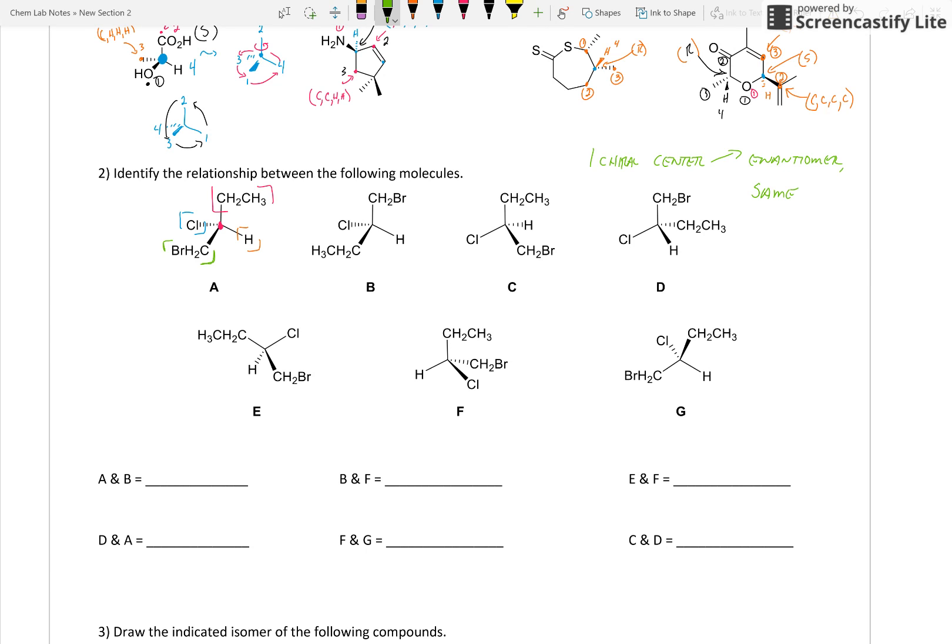If they all have the same formula and you only have one chiral center, and they're all connected in the same way, really all you can have is an enantiomer or the same molecule. You can't have a diastereomer for a single chiral center. So this question is deceptively trickier than it really is.